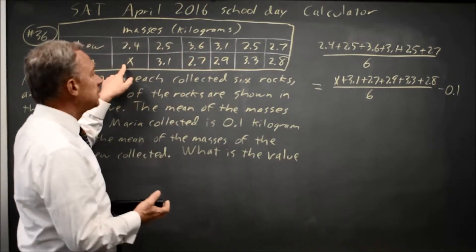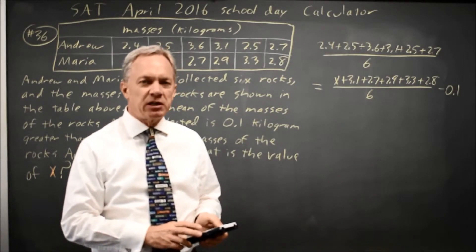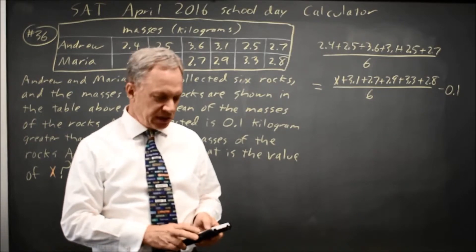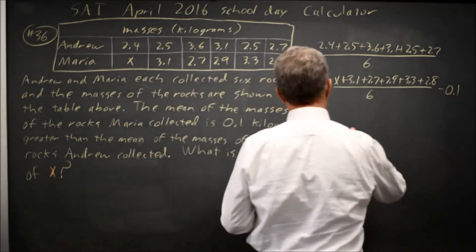Looking at these masses of rocks, I expect my mean to be between 0 and 10, and I expect the missing rock x to also be in that window, so I'm just going to use the standard window and hit graph, and my graph looks something like this.